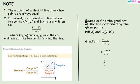Now number two, in general, the gradient of a line between two points, A, let's say point A and point B, is going to be x1, y1, and x2, y2, which is written as y2 minus y1 over x2 minus x1, where x1, y1, and x2, y2 are the coordinates of the two points forming the line.